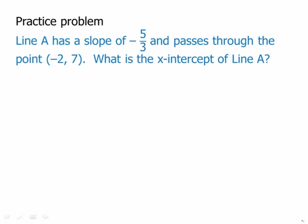Here's a practice problem. Pause the video, and then we'll talk about this. We're given a slope of negative five-thirds and a point on the line (-2, 7), and we want to know what is the x-intercept of the line.